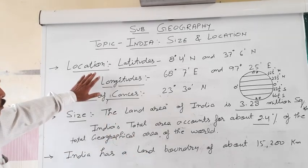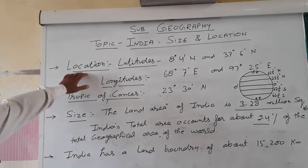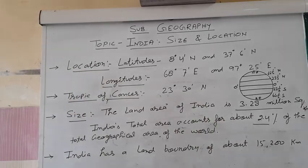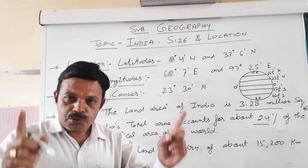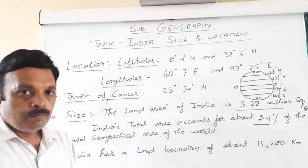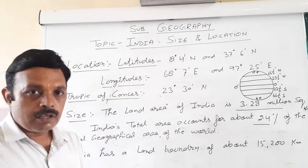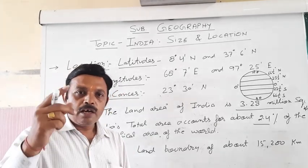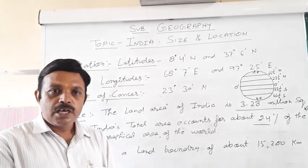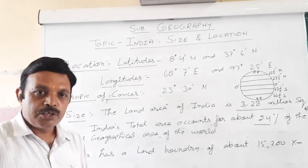Today we discussed about the location, the Tropic of Cancer, the size, the land boundary, and the coastal region. These are the important portions and important divisions for your first chapter work. Thank you. Have a nice day.